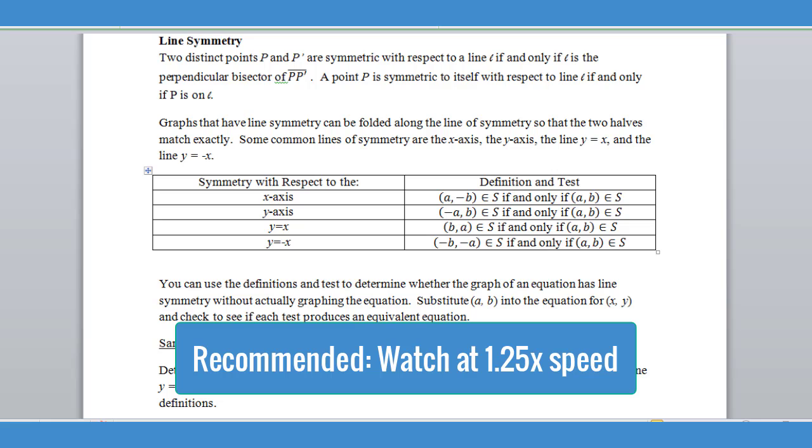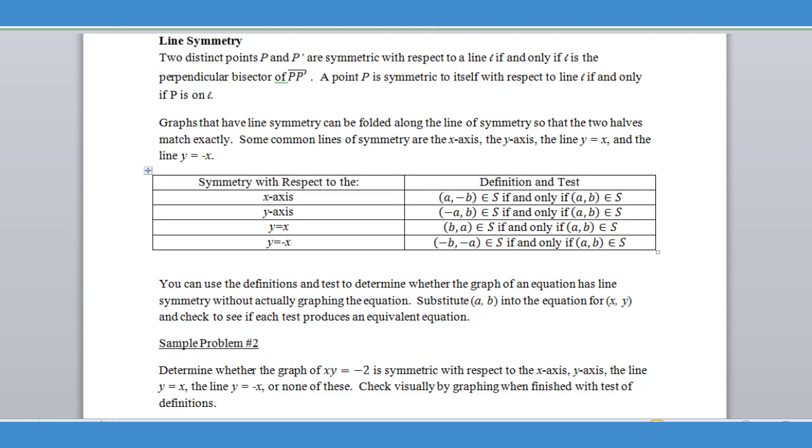Now we'll test our function graphs for line symmetry. For dealing with line symmetry, the simplest way for us to tell if something is symmetric across a line is to basically take the graph and fold it in half along a line of symmetry and see if the two halves match up exactly.